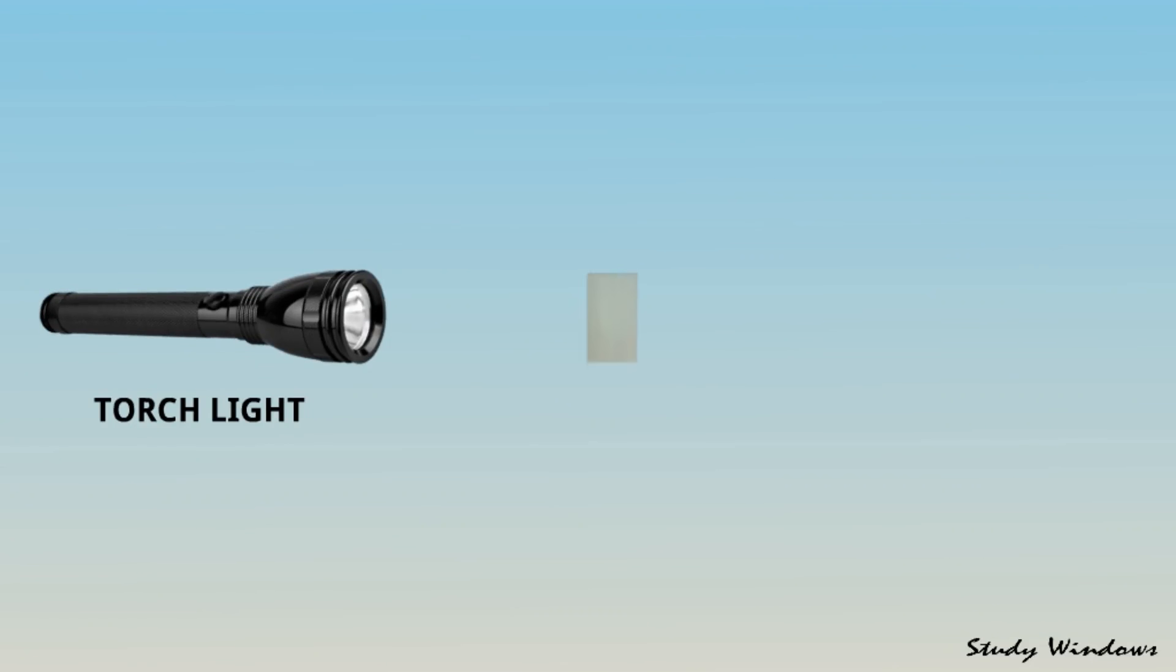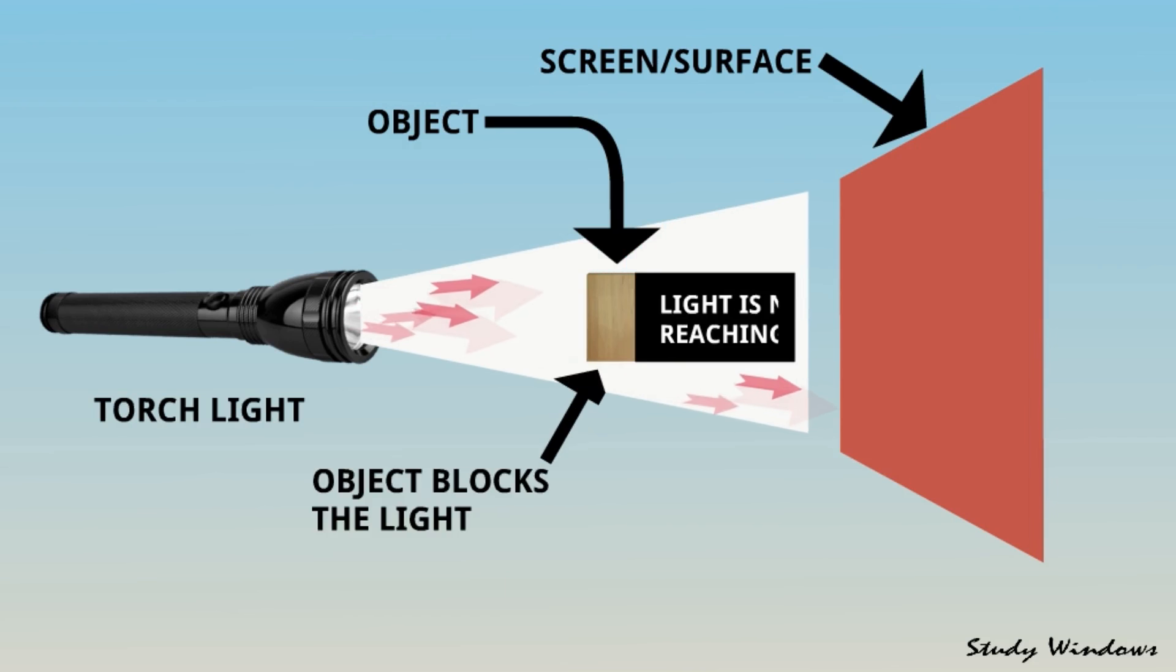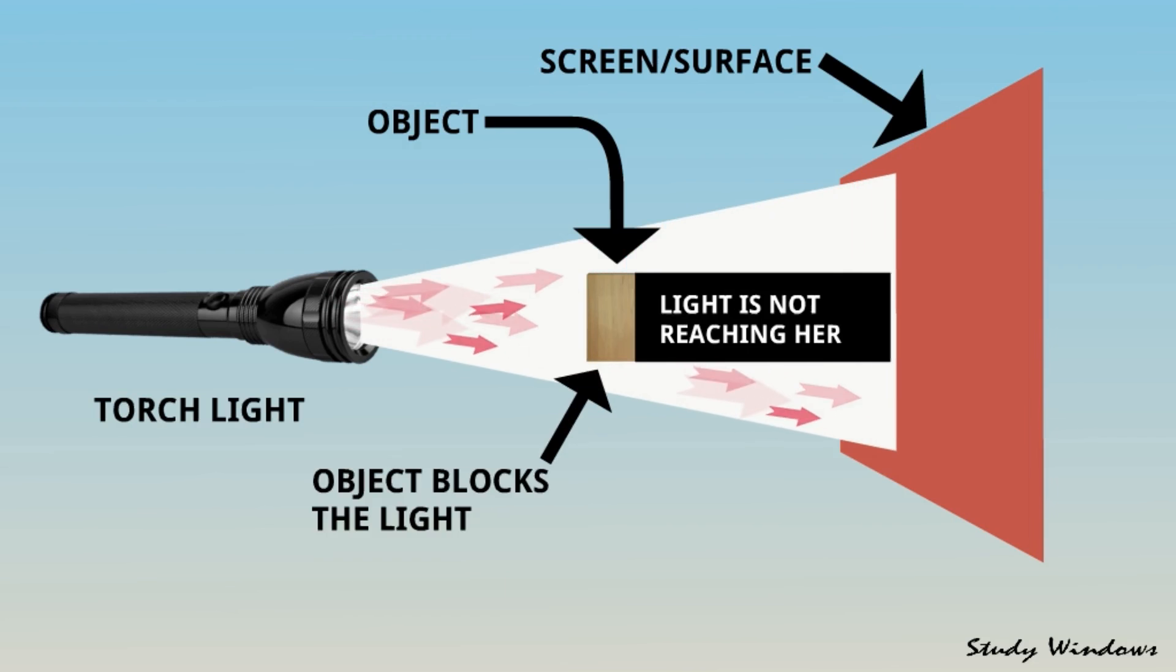So how is this shadow formed? Take a torch light, take one object and one screen or surface. Now if we switch on the light and light rays fall on the object, the object blocks the light and light is not reaching behind the object. All around the space is having light, but behind the object there is no light. So this portion, since the light is blocked, shadow is formed.